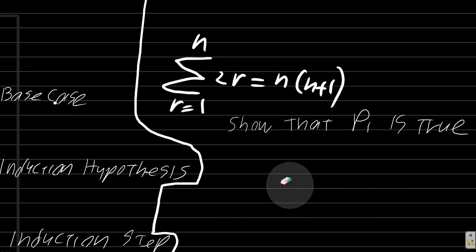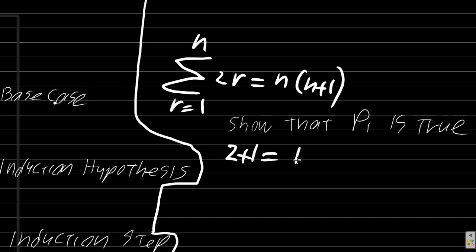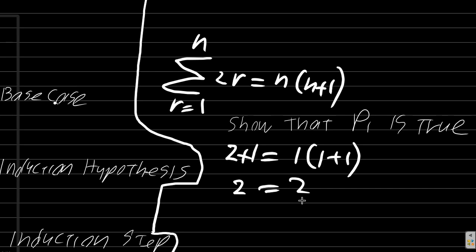But you only need to show that p1 is true. So write it: 2 times 1 equals 1 times 1 plus 1 when n is 1. 2 times 1 is 2, and 1 times 2 is 2. So p1 is true.